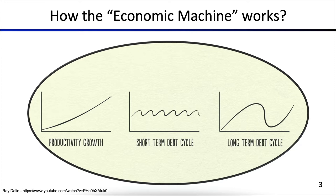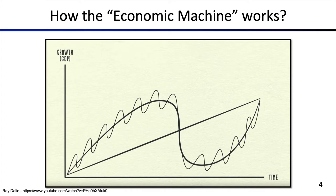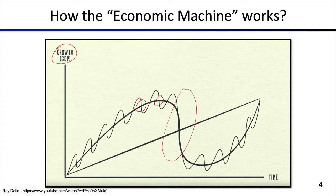I really recommend Ray Dalio's video on YouTube that explains in about 30 minutes how the economic machine works. It's a beautiful video that lays out that we have an assumed productivity growth over time, short-term debt cycles, and longer-term debt cycles. When you superimpose all three, you get a structured pattern over time with GDP growth on the y-axis — that's how the economic machine works. The bigger cycles are often referred to as financial crashes, while smaller corrections also occur, because the entire system is cycle-based: sometimes people need more money, sometimes less.